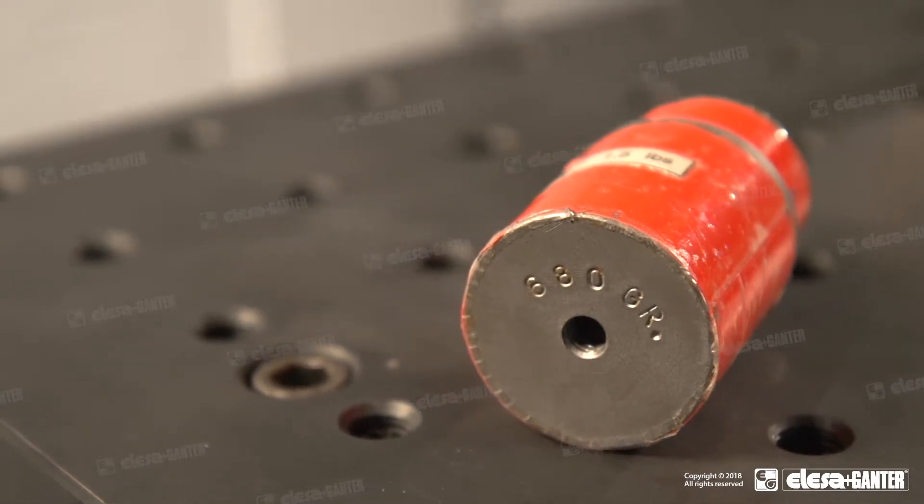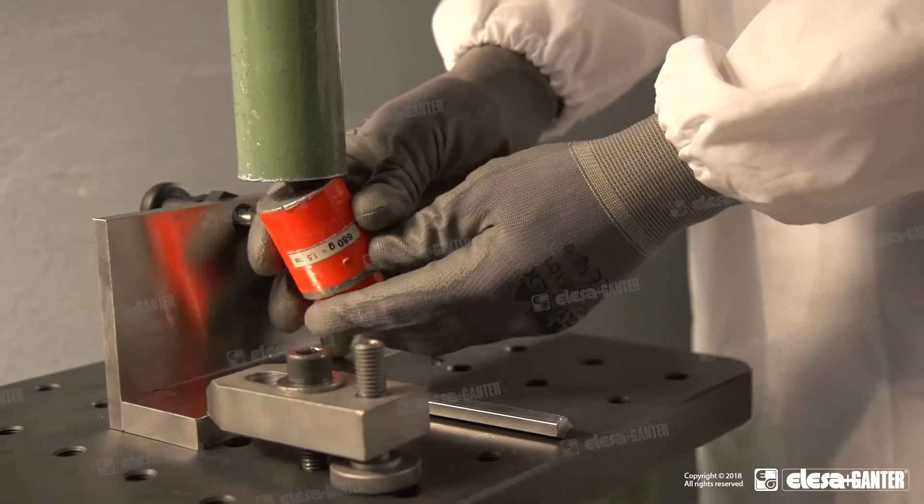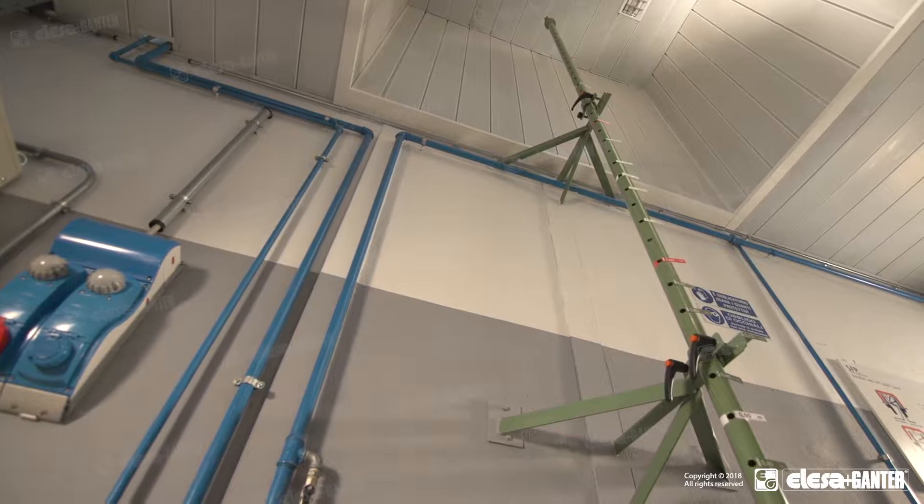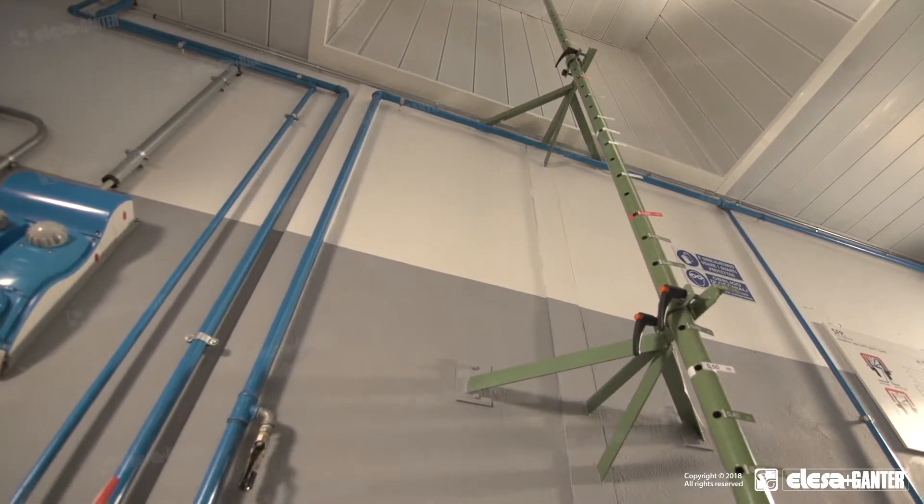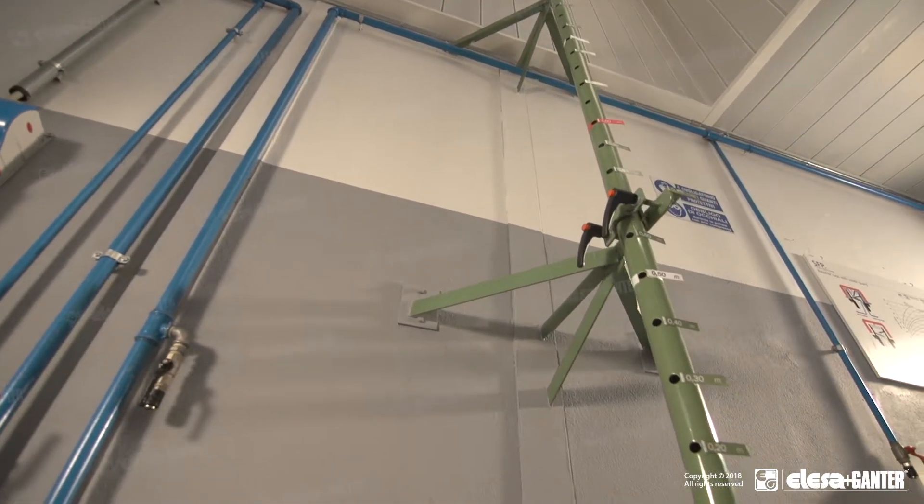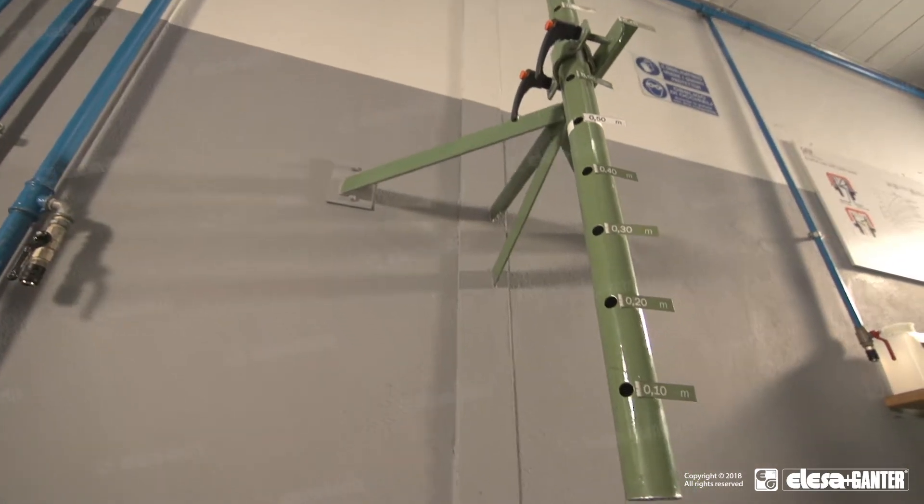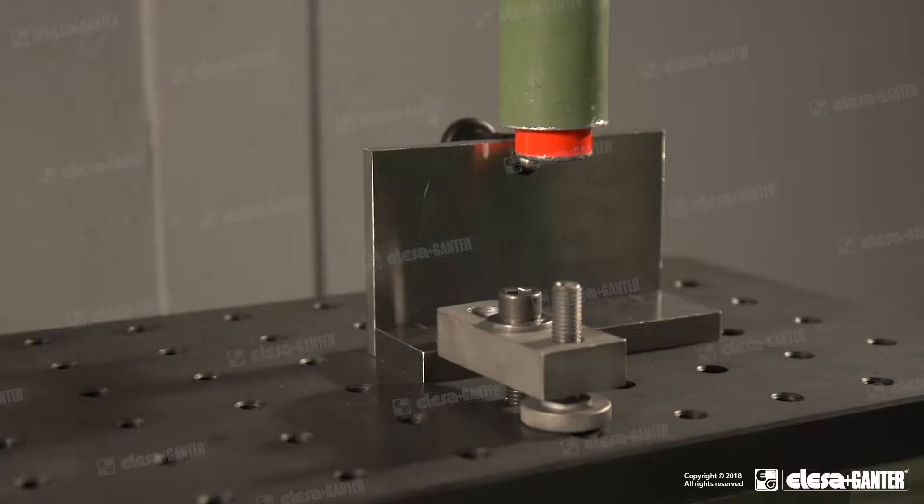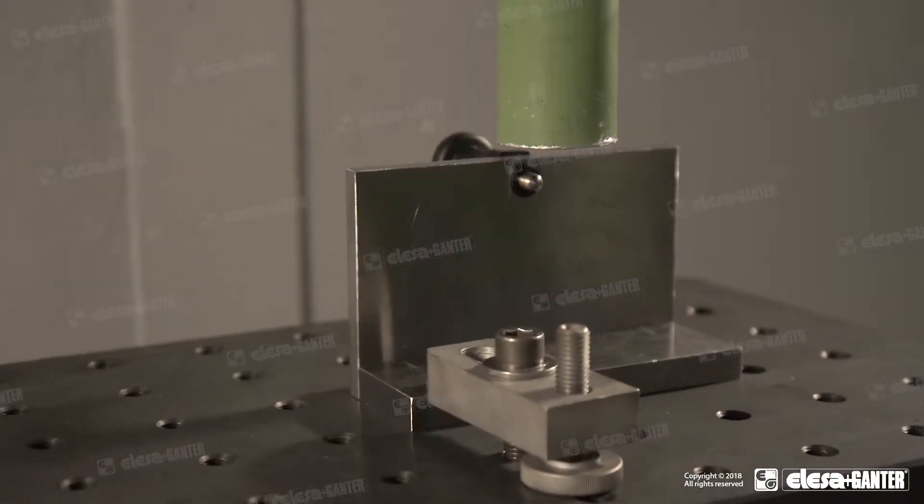A 680 gram steel impact weight running inside a rail is dropped from a given height, impacting with the plunger. The impact point is on the plunger end, thus reproducing the most severe working conditions.